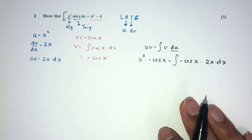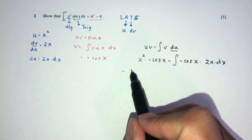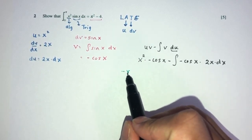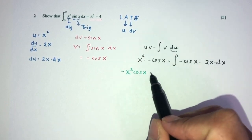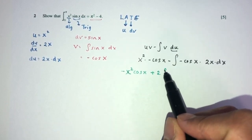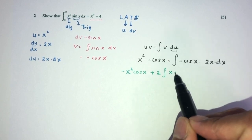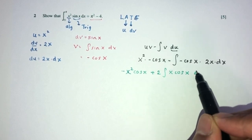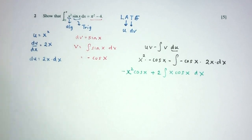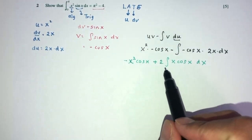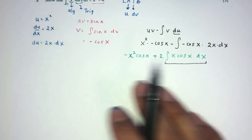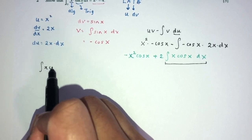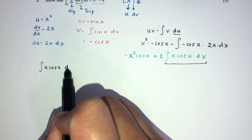Now, to find the value of this integral we use the formula: uv minus the integral of v du. So u is x squared times v which is minus cos x, minus the integral of v which is minus cos x times du which is 2x dx. That gives minus x squared cos x, plus 2 outside the integral of x cos x dx. Now, one more time we have to perform another integration by parts for this integral.